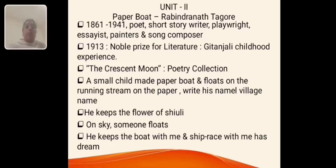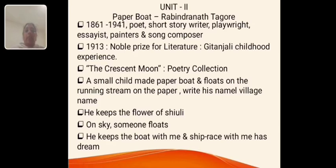Unit 2, the poem Paper Boat, is by Rabindranath Tagore. He was born in the year 1861 and died 1941. He is a miscellaneous person because he is a poet, short story writer, playwright, essayist, painter and song composer. He received the Nobel Prize in 1913 for his work Geetanjali. In this poem Paper Boat, he shared his childhood experience. This poem is taken from the poetry collection Crescent Moon. Here the narrator is a small child who kept paper boats on the stream, wrote his name and village name on them, placed a sheouli leaf flower on top, and reminisces over it.